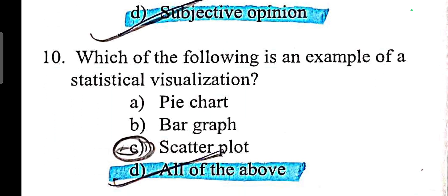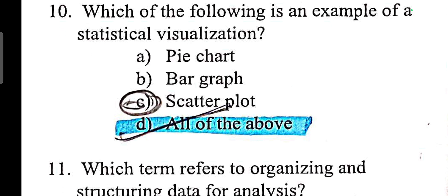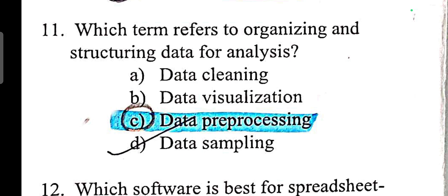What is the following is an example of a statistical visualization? Answer is pie chart, bar graph, scatter plot, all of the above. Which term refers to organizing and structuring data for analysis? Answer is data preprocessing.